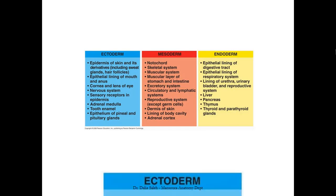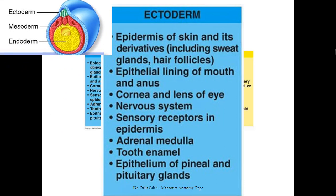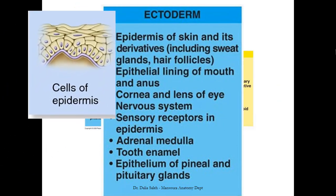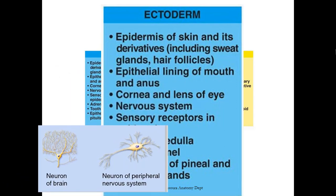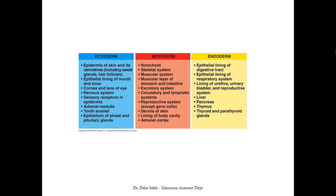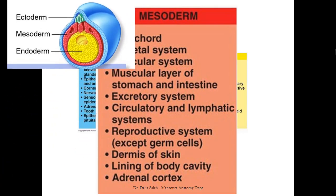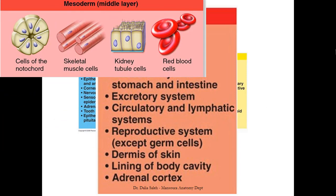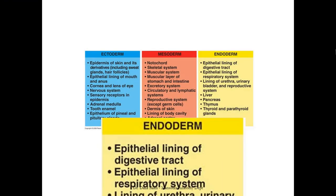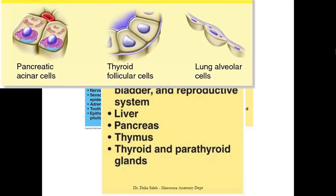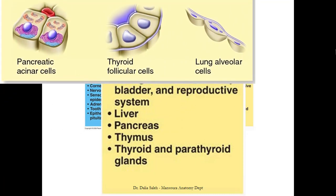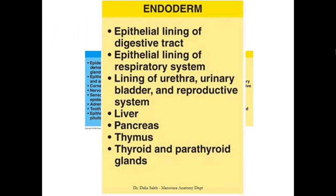What are the derivatives of the three germ layers? The ectoderm forms structures in contact with the external environment: the epidermis of the skin, the epithelial lining of the mouth and anus, the cornea and lens of the eye, the CNS or nervous system, and sensory receptors in the epidermis. The mesoderm forms the intermediate part of the body: the skeletal system, the muscular system, the genitourinary system, and the cardiovascular system. The endoderm is the inner lining of the body: it forms the epithelial lining of the digestive tract, the respiratory system, the urethra, urinary bladder, and reproductive system. It also gives rise to viscera such as the liver, pancreas, thymus, thyroid, and parathyroid glands.